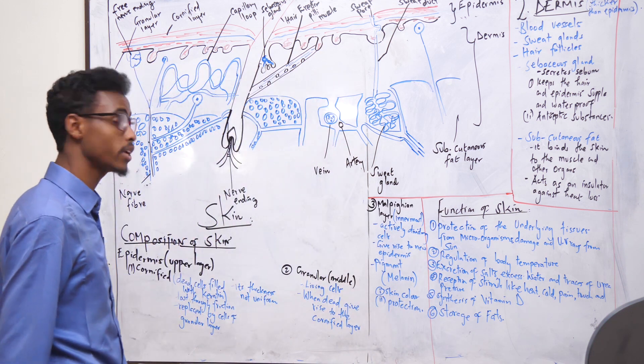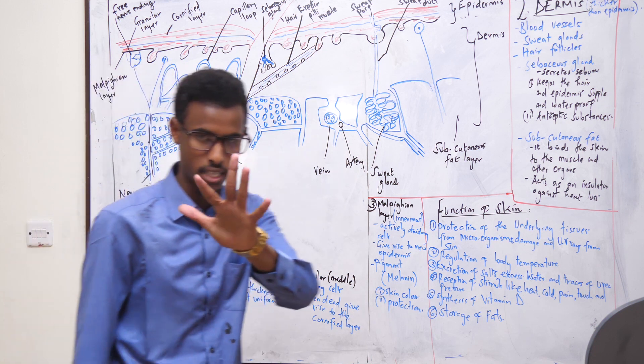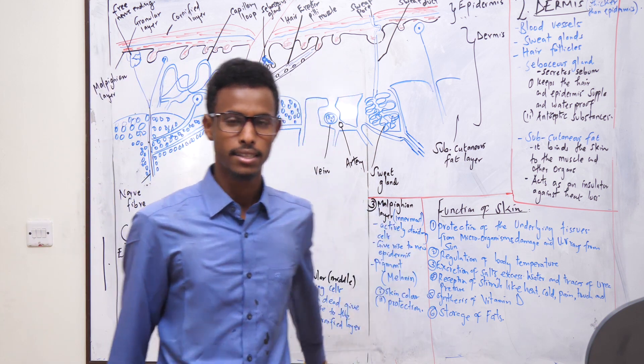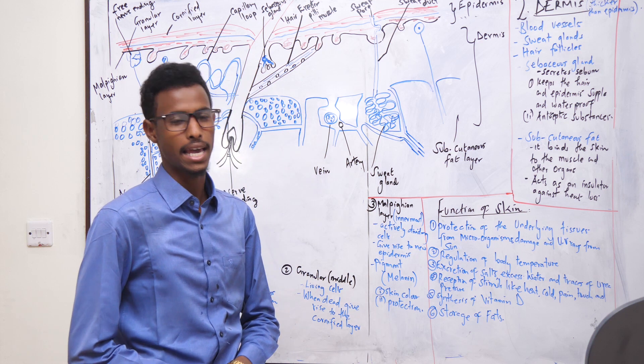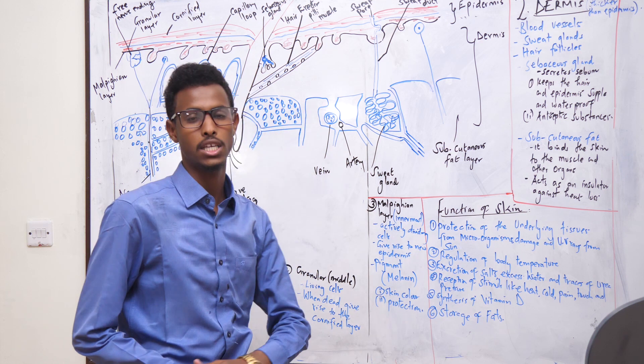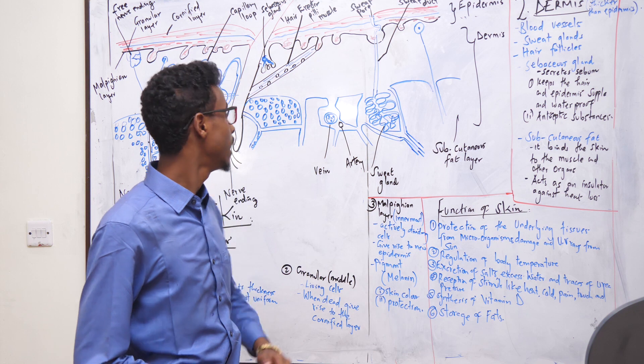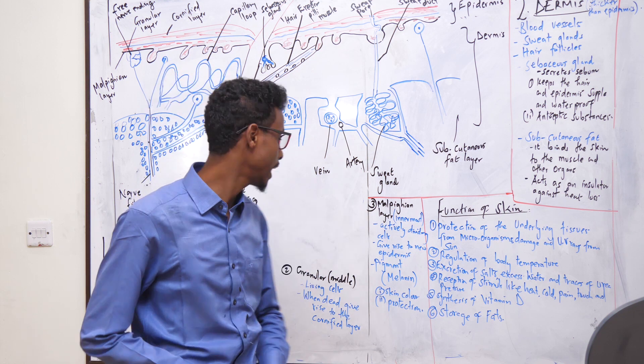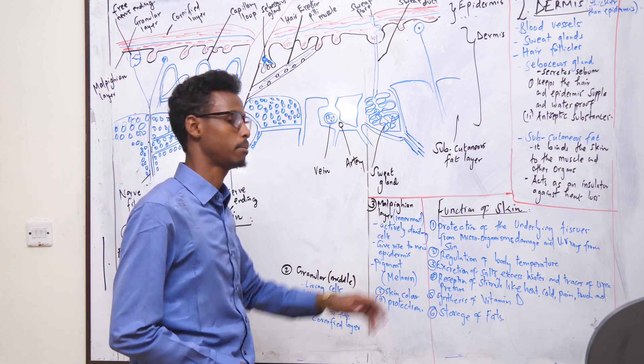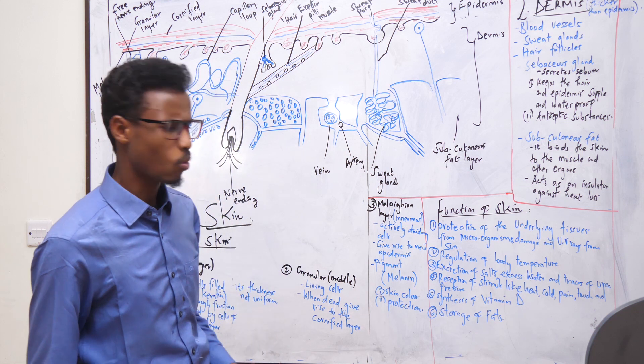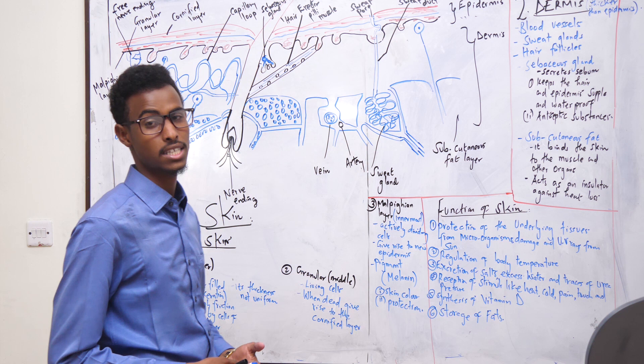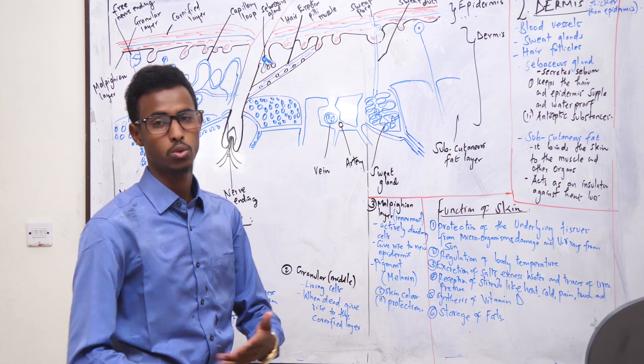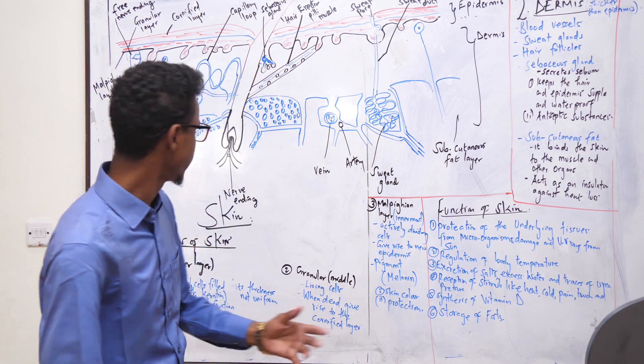The epidermis has three layers. The uppermost layer is called the cornified layer, the middle layer is called the granular layer, and the innermost layer is called the malpighian layer. Let's look at each one - which ones are the dead cells, which ones are living, and which ones are actively dividing.